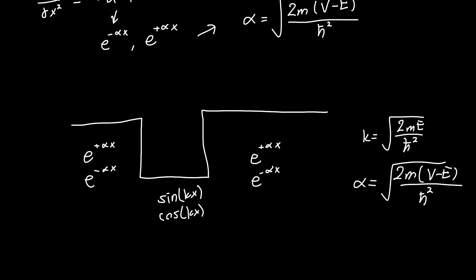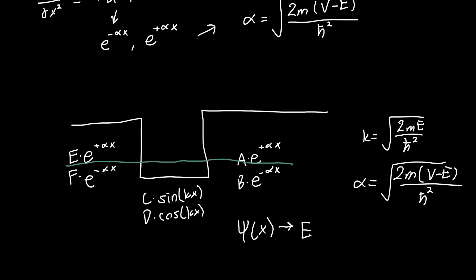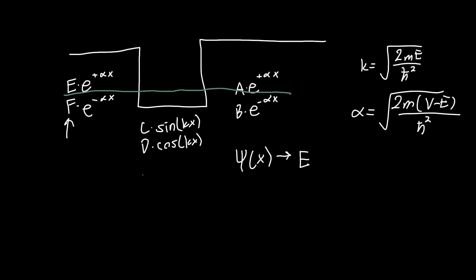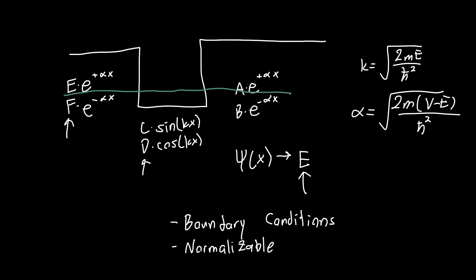All we have to do now is apply our boundary conditions to determine the coefficients A, B, C, D, etc., out front of each solution, and figure out what the full ψ(x) looks like. This will give us the energy of the overall state. In the next video we'll solve for all these coefficients and the energy by applying the boundary conditions. We'll also apply normalizability — the wave function must be normalizable and cannot blow up as we approach infinity.